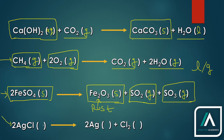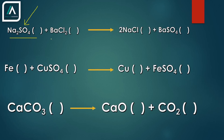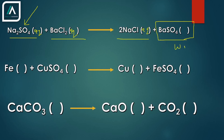Next example: silver chloride again — it is a salt so it is going to be solid. We are getting silver, which is a metal, so solid. Chlorine is a gas. Next: sodium sulfate plus barium chloride gives sodium chloride and barium sulfate. This is an example of double displacement reaction, so it will take place in aqueous solution. Sodium sulfate, barium chloride, and sodium chloride are water-soluble, so they will be aqueous. But barium sulfate is water-insoluble, so it will be solid.